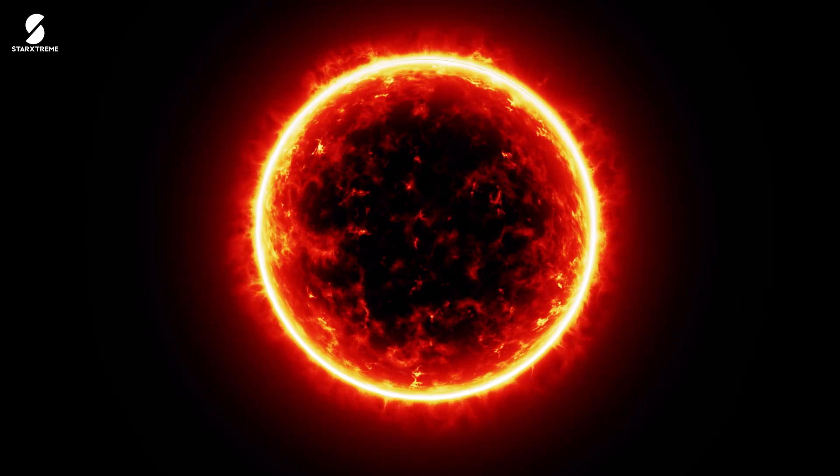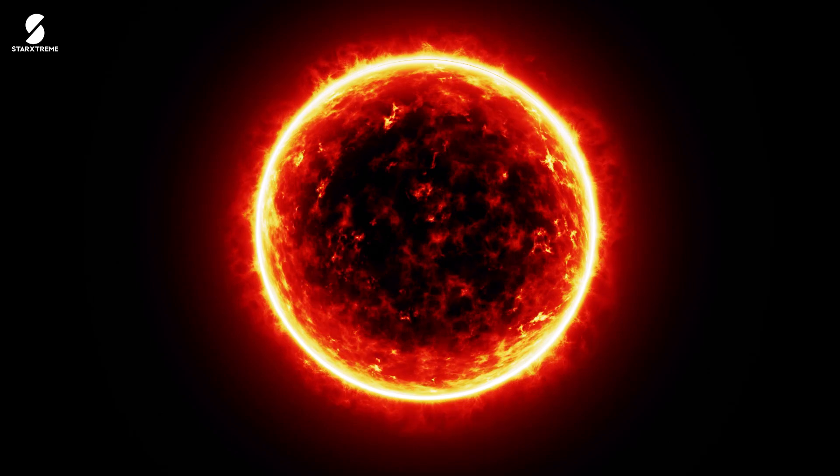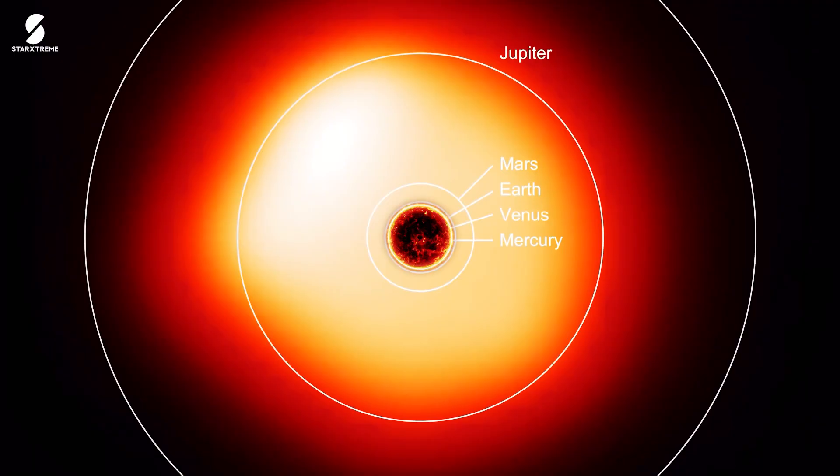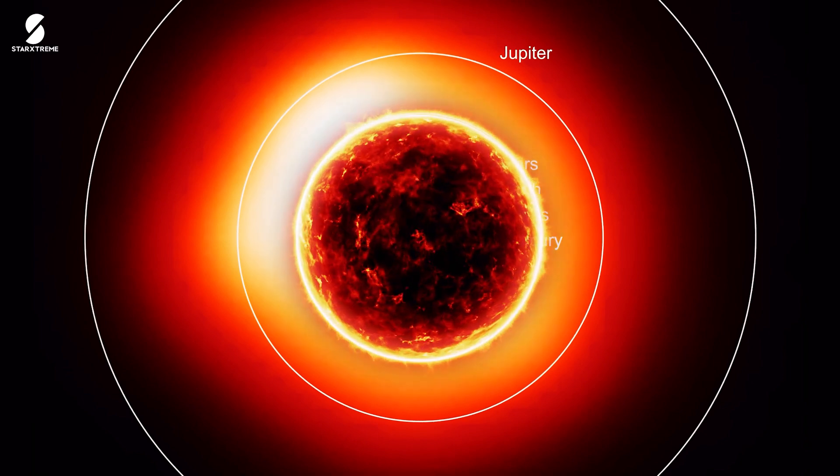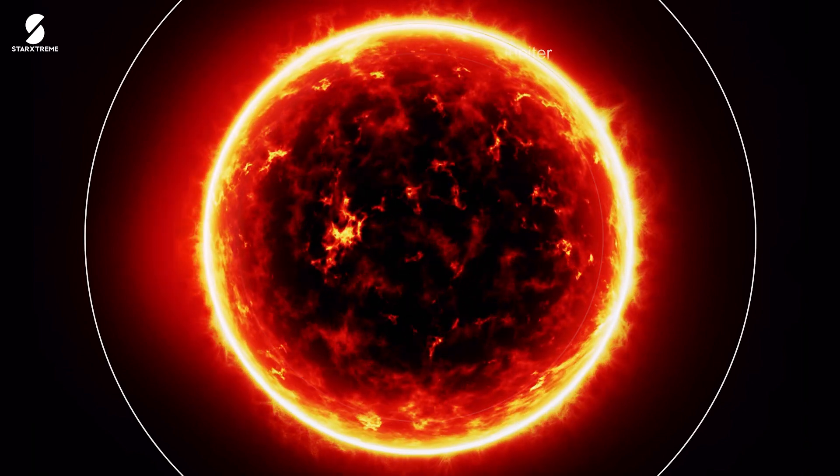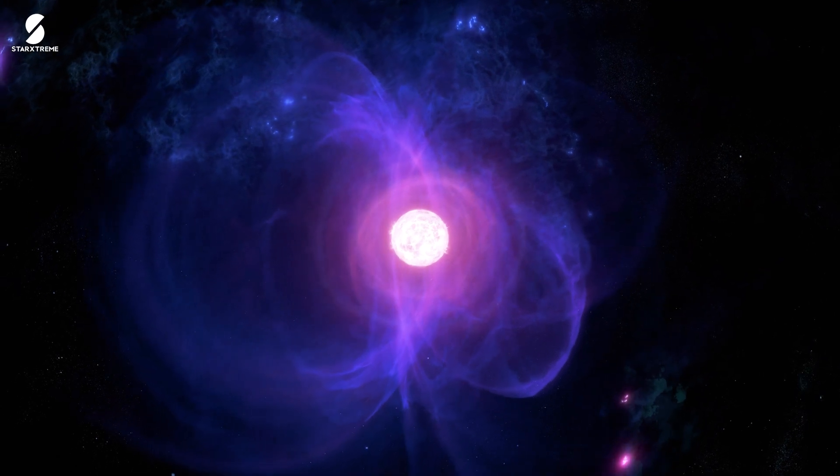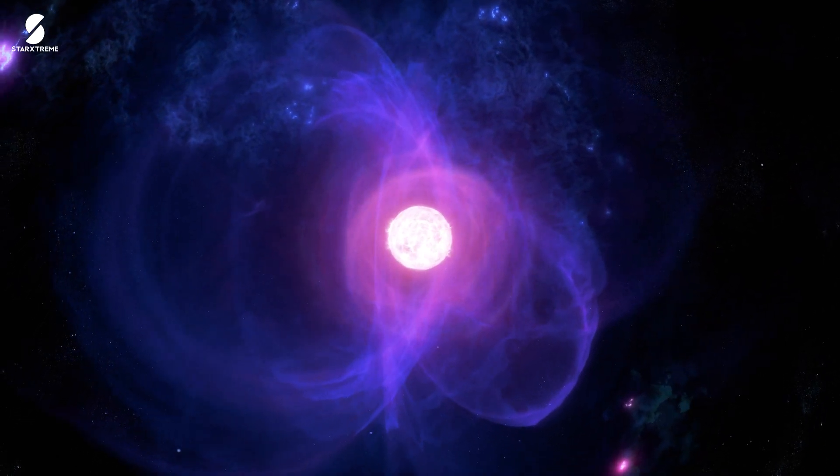Now Betelgeuse is a true giant, with a diameter more than 1,000 times that of our Sun. If you placed it at the center of our solar system, it would engulf the inner planets, including Earth, and go all the way up to Jupiter. Its immense size and mass make it a red supergiant star nearing the end of its life.